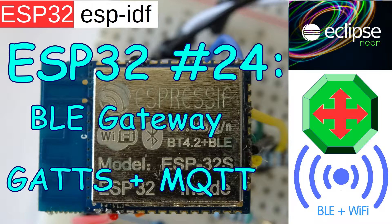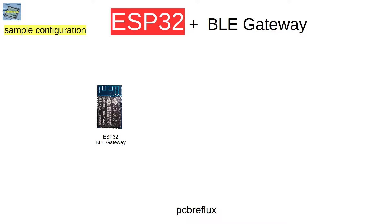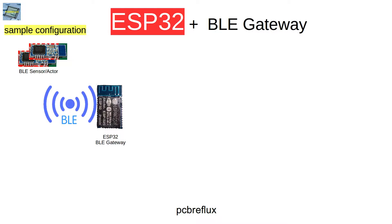If we want to use the ESP32 as a gateway, the first question we have in mind is: what can we do with the gateway? Imagine if you have some Bluetooth Low Energy sensors or actuators — then, in a home automation environment, you can read the sensor data or even switch an actor like a light bulb or a heater.